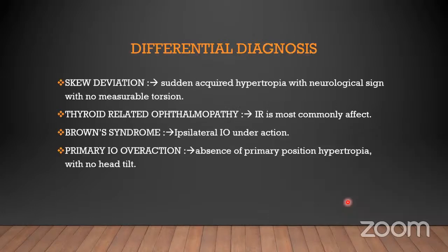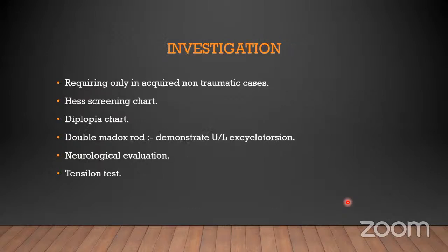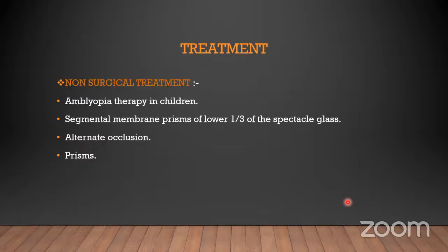Differential diagnoses: skewed deviation presents with sudden acquired hypertropia with neurological signs but no measurable excyclotorsion. Thyroid-related ophthalmopathy — IR is most commonly affected. Brown syndrome — ipsilateral IO underaction and primary IO overaction, absence of primary position hypertropia, and no head tilt. Investigations are required only for acquired non-traumatic cases: diplopia charting, double Maddox rod test to demonstrate excyclotorsion, neurological evaluation for trauma, and Tensilon test for myasthenia gravis.